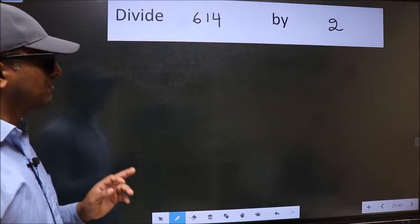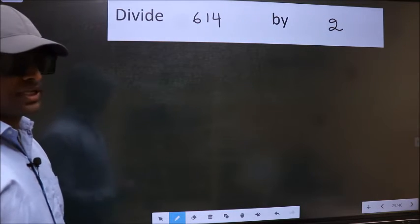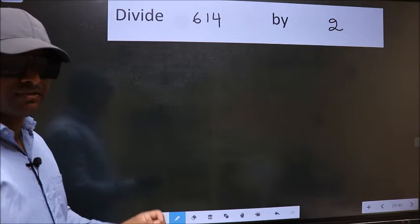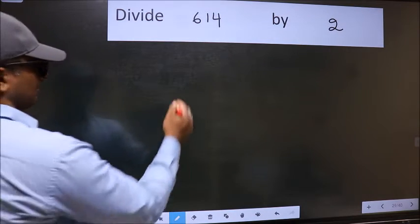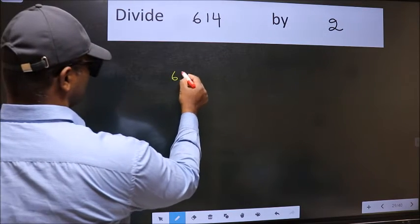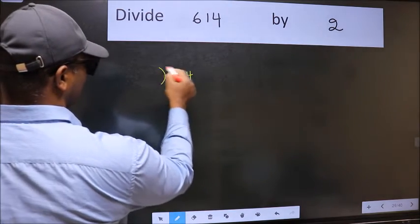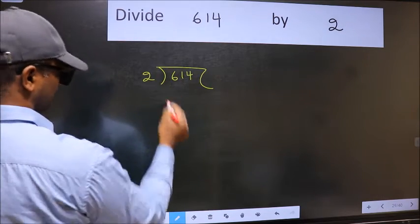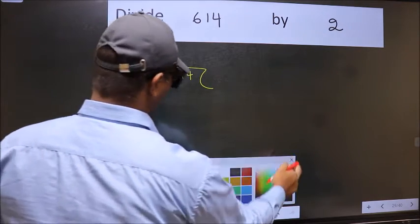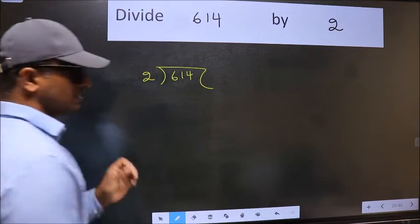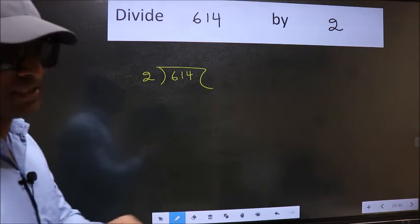Divide 614 by 2. To divide this, we should frame it in this way: 614 and 2 here. This is your step 1.